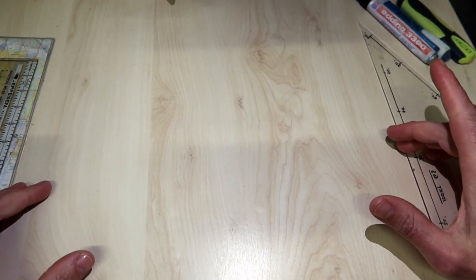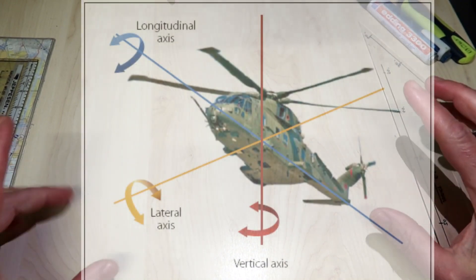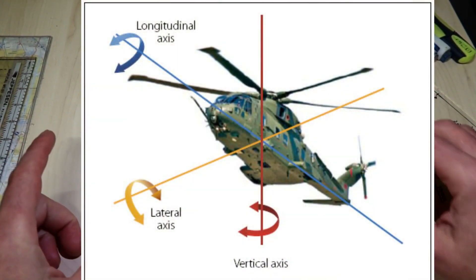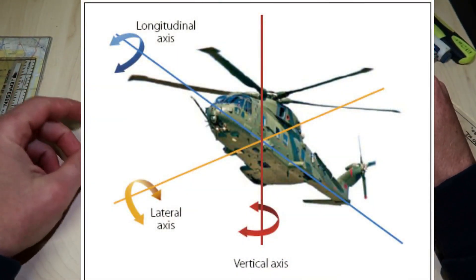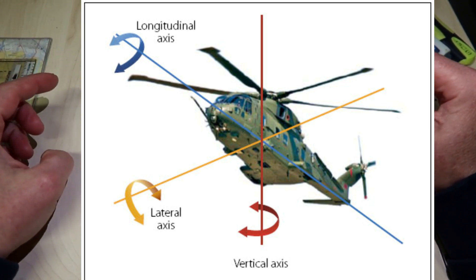When maneuvering in the air, the helicopter moves around the three axes of flight, which all act through the helicopter's center of gravity.